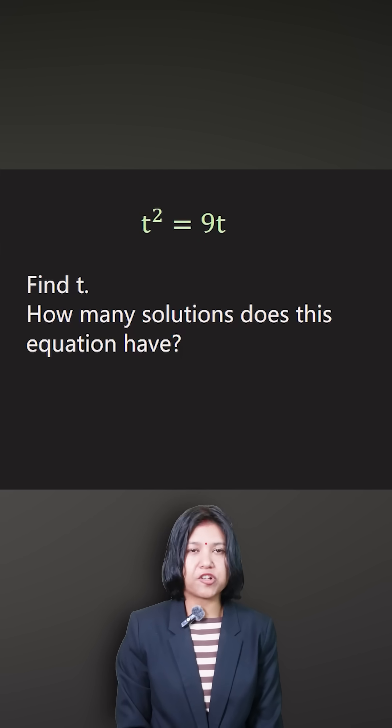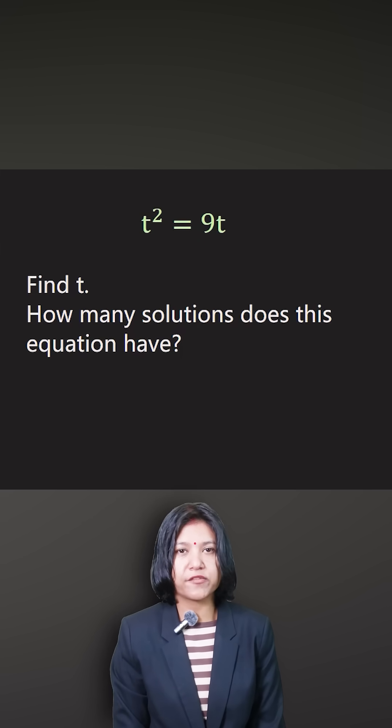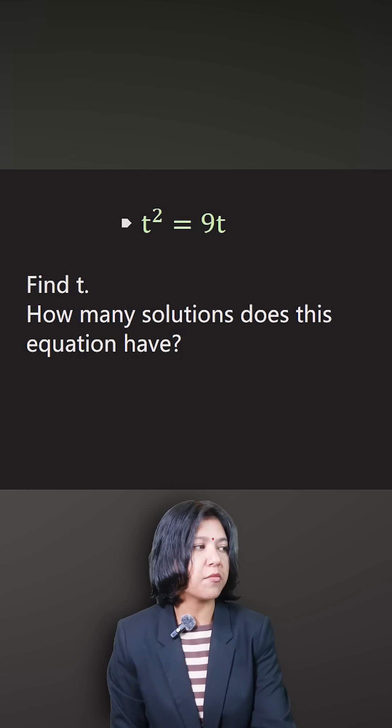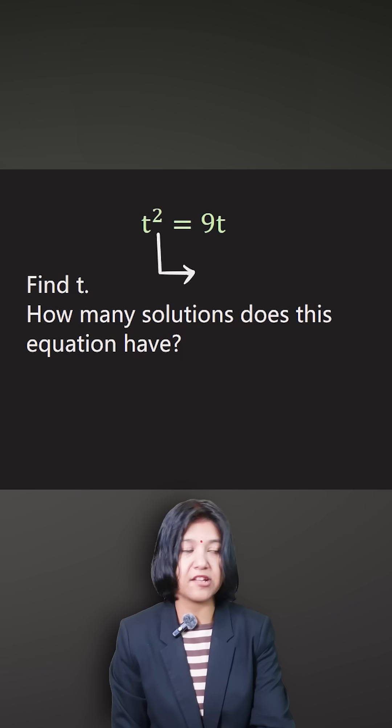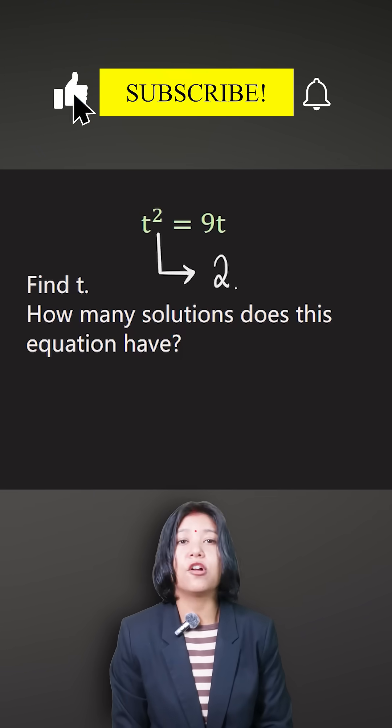t squared equals 9t. First of all, the highest power of the equation always tells you how many solutions the equation has. Okay, so you must have two solutions.